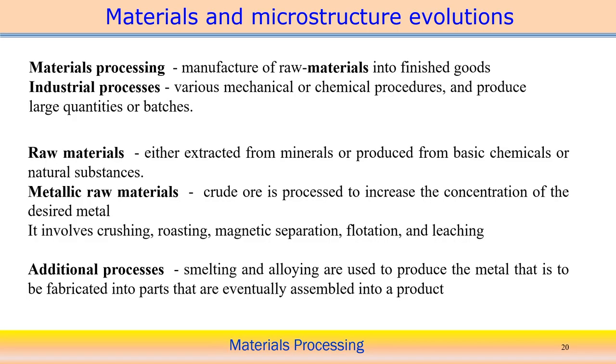Raw materials are either extracted from minerals or through mining, and after that we go through basic chemical processes to produce basic chemicals or natural substances. Through this particular processing, we can convert raw materials into usable material for the manufacturing process. If we look into metallic raw materials, crude ore is processed to increase the concentration of the desired metal.